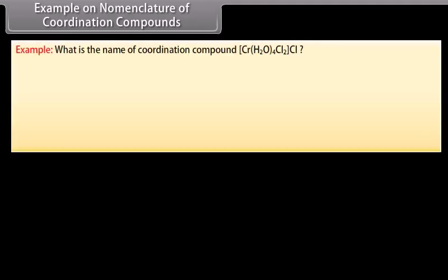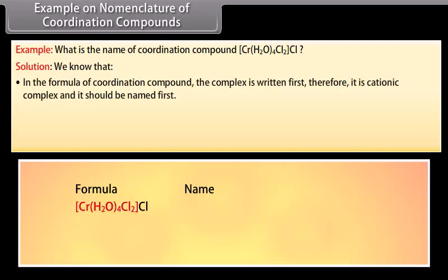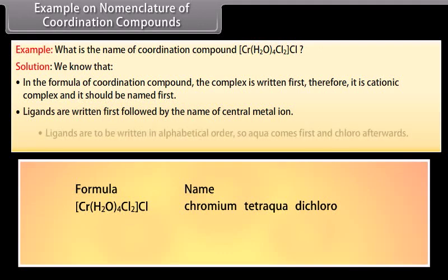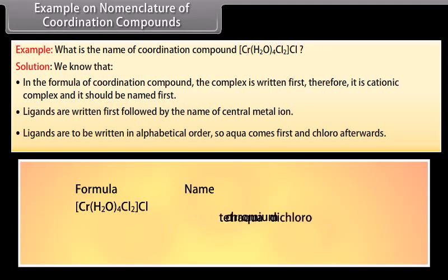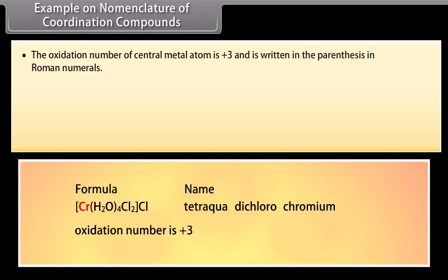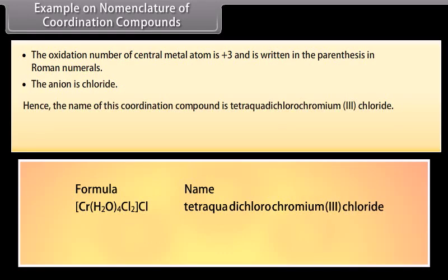Example on Nomenclature: What is the name of the coordination compound [Cr(H2O)4Cl2]Cl? In the formula, the complex is written first; therefore it is a cationic complex and should be named first. While naming the complex, ligands are written first followed by the name of the central metal ion, in alphabetical order: aqua comes first and chloro afterwards. The oxidation number of the central metal atom is +3, written in parentheses in Roman numerals. The anion is chloride. Hence, the name is tetraaquadichlorochromium(III) chloride.